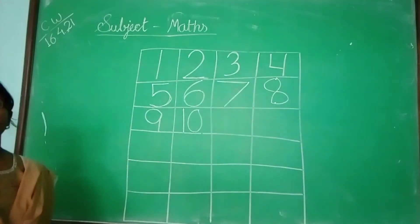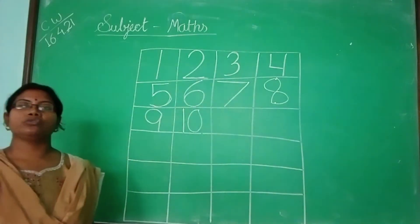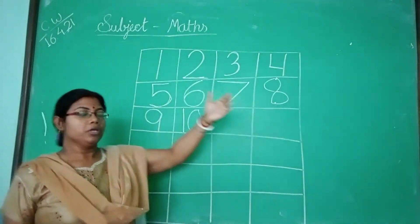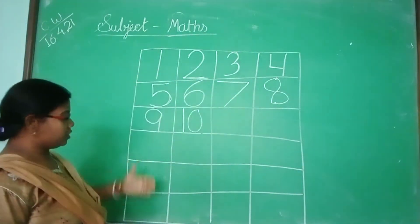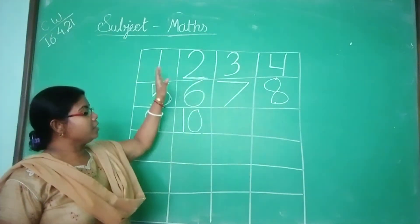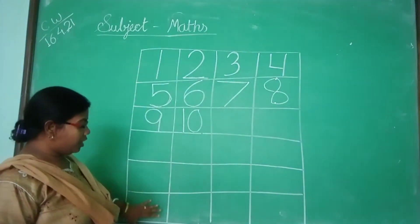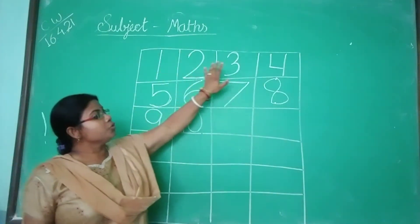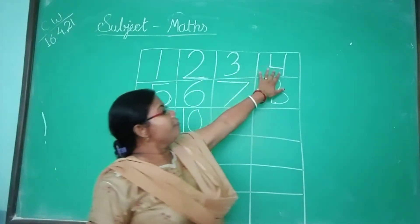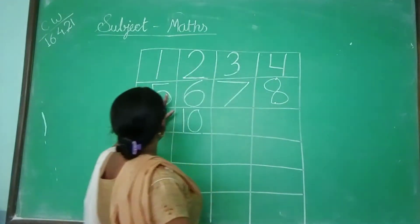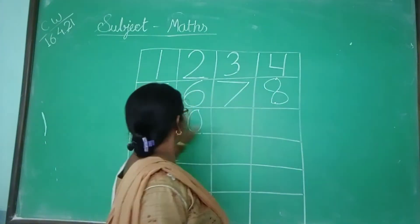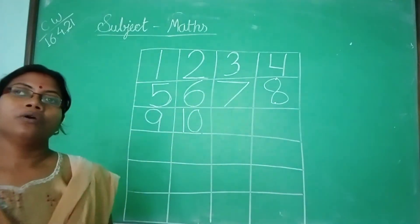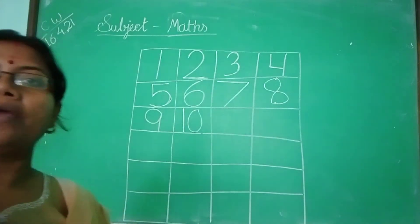Whenever you are writing 1 to 10, you will write in this way — not in this way. You will write: 1, 2, 3, 4, 5, 6, 7, 8, 9, 10. Okay!